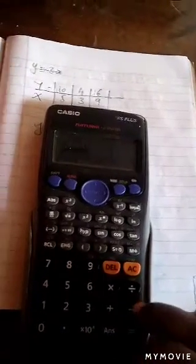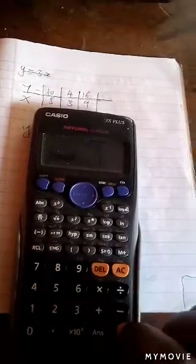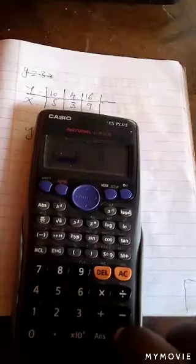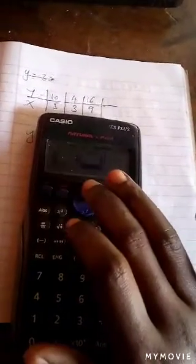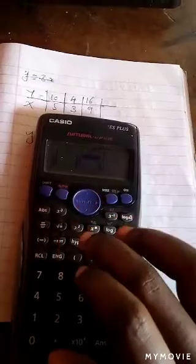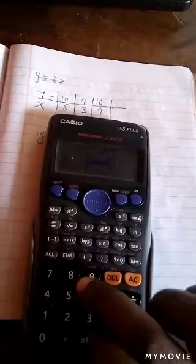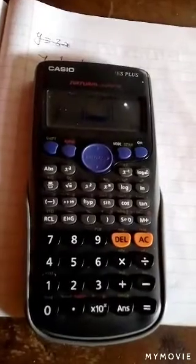Go to the other side where there is y values. We start by filling in 10, which is the first value, and then we press equals to, then 4 which is the next value, press equals to, then the last value is 6.